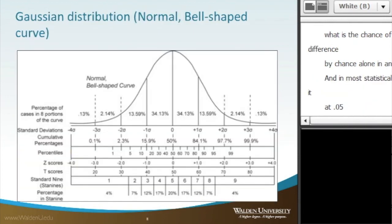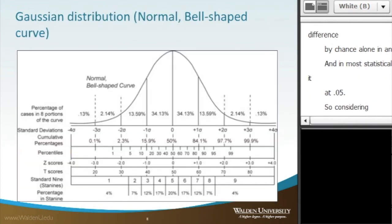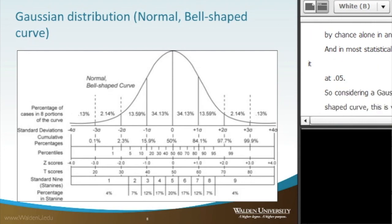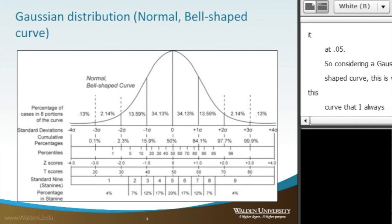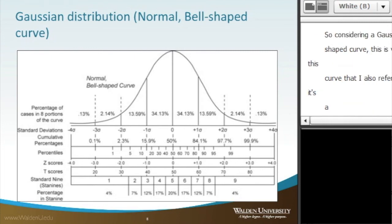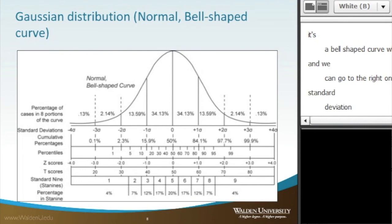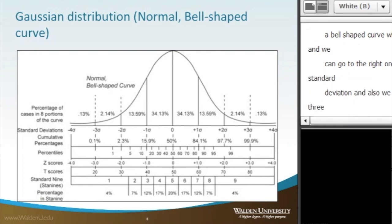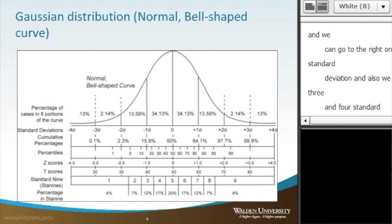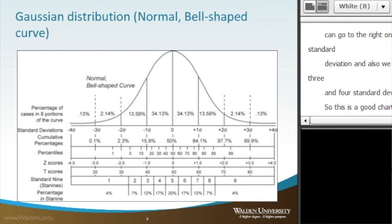Considering a Gaussian distribution, or a normal bell-shaped curve — this is the curve I always refer to as the Taco Bell curve — the center is the mean, and then we can go to the right one, two, or three standard deviations, and of course to the left one, two, or three standard deviations, out to four standard deviations. This is always a good chart to keep around if you get confused about how the distribution works with standard deviations.